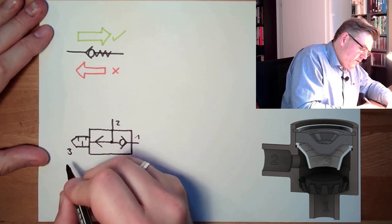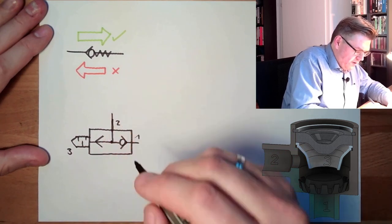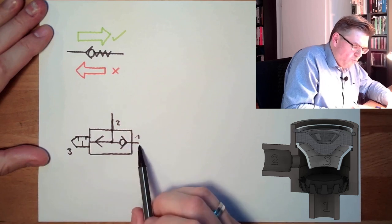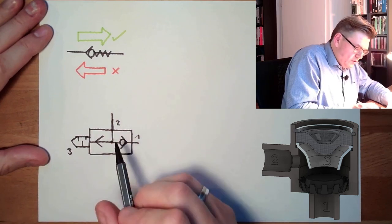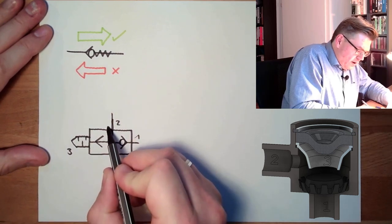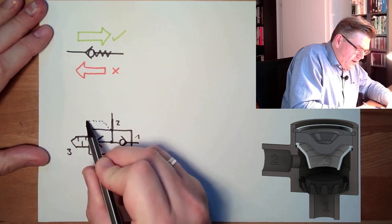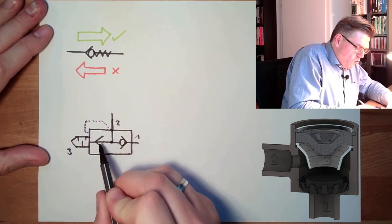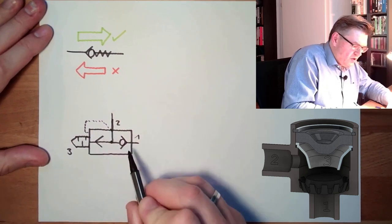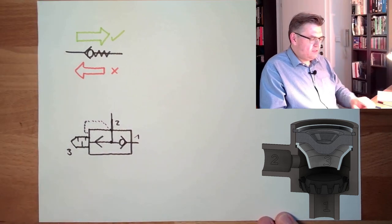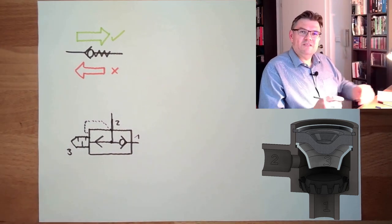If there is no noise cancelling it's just this little arrow. So this is the three connector. And now to indicate that three is only open if at two is pressure, we are making this dotted line here which will lift off the ball in this direction. So this is the symbol of the quick exhaust valve.